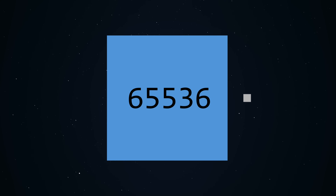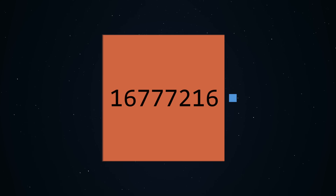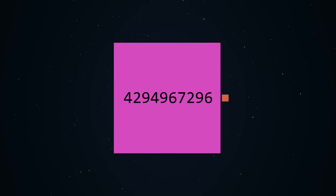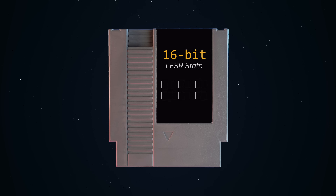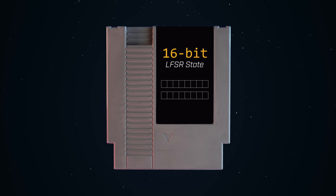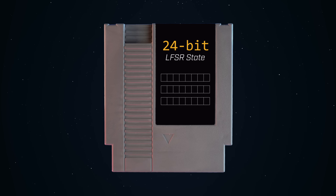Expand the generator to use 16 bits and you get over 65,000 numbers. At 24 bits, you get well over 16 million. And at 32 bits, you can generate a whopping 4.29 billion numbers before they begin to repeat. For NES games, generally 16 bits is more than enough, but you can jump to 24 if you need to generate a lot of numbers. And as far as the algorithm is concerned, that's pretty much it.